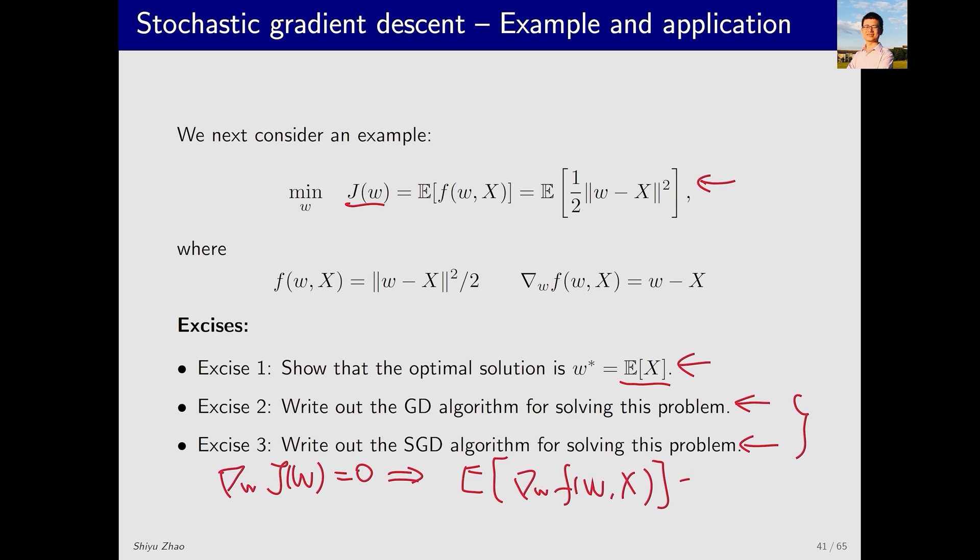This quantity should be zero. We know this equation, so it is w minus x. We can get E[w - x] equals zero. W itself is not a random variable, so its expectation is itself. Therefore we get w equals E[x].